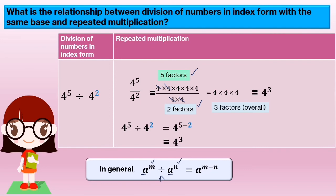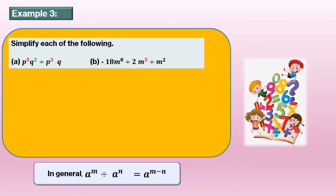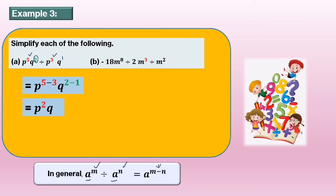Example 3: simplify each of the following. Part a: p power of 5 times q power of 2 divided by p power of 3 times q. For division, algebraic terms with the same base have their indices subtracted: p power of 5 minus 3, q power of 2 minus 1. So the answer is p power of 2 times q — we don't need to write power of 1 in the final answer.